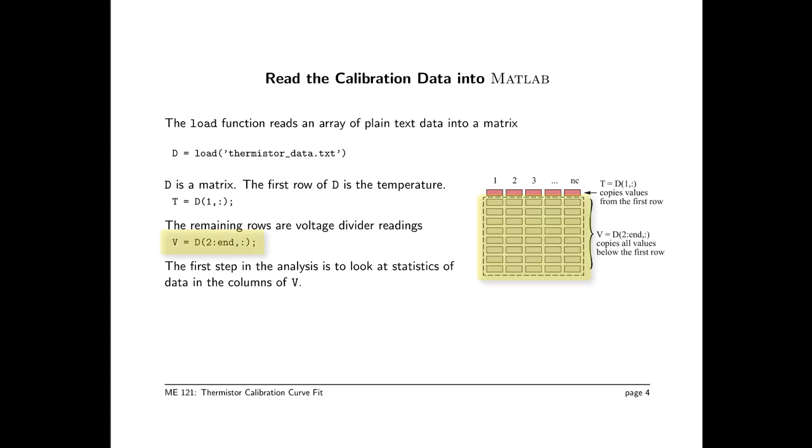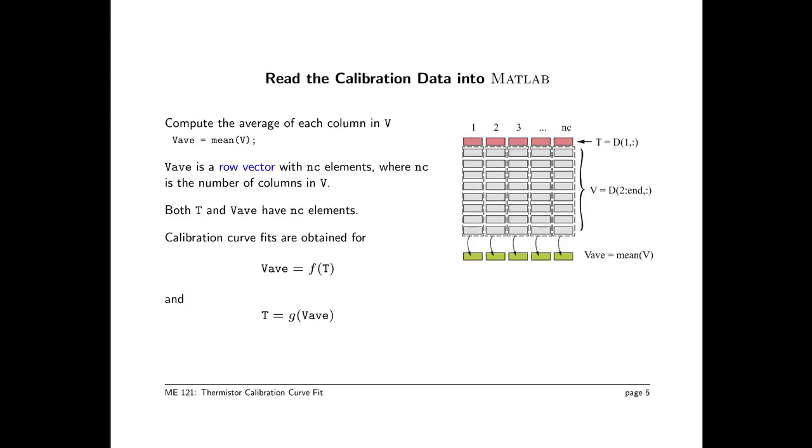And then after t we created a new matrix variable v which has all the remaining rows. So the two colon end for row indexes say that I want the second row to the last row. And the colon for the column indices say that I want all the columns. So what we've done is we've moved data from d which is from the load command and copied it into two working variables. The next step is to compute the mean of the columns. And that's simply done with vav equals mean of v.